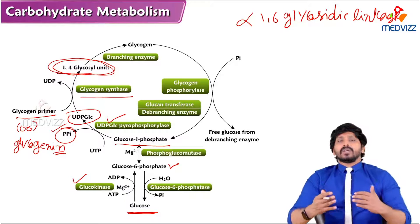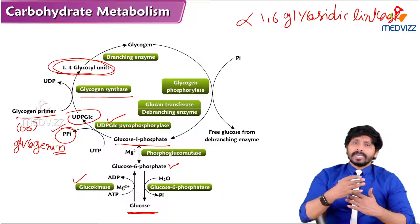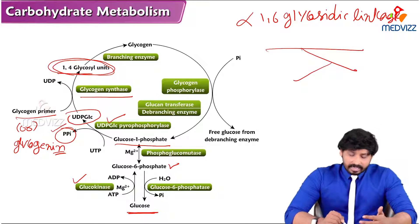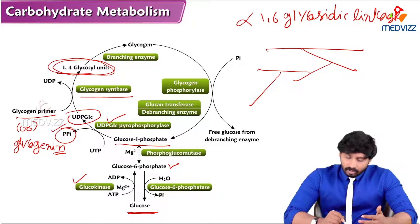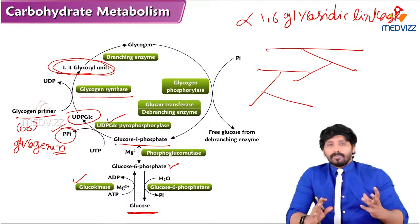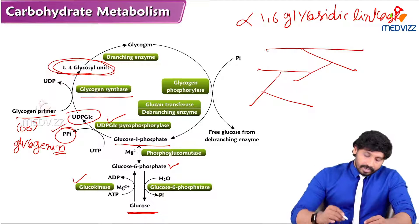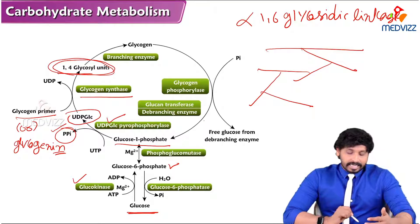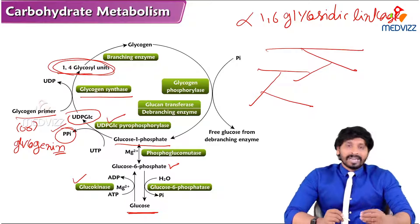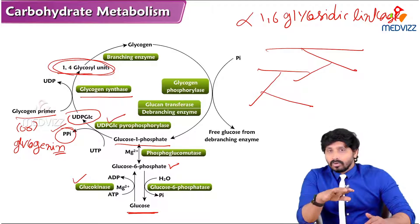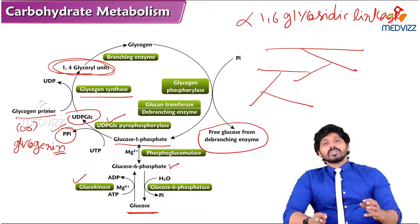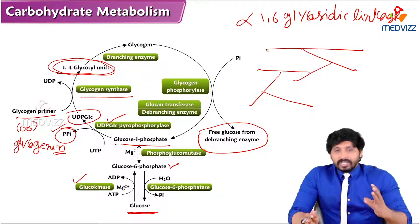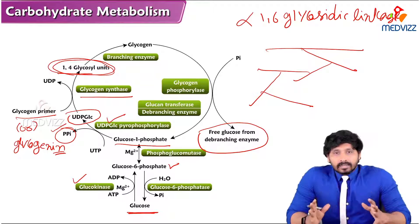This process is repeated: glycogen synthase acts repeatedly, then the branching enzyme acts repeatedly — extending the chain, branching, removing some glucose units, branching again — until a complex branched structure forms. When free glucose is needed from glycogen, the debranching enzyme (also called glucan transferase) works alongside glycogen phosphorylase. By introducing a phosphate group, it breaks the branching and liberates free glucose.